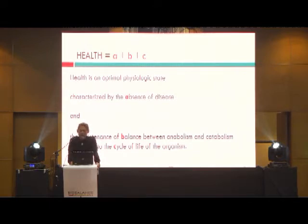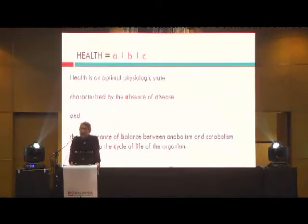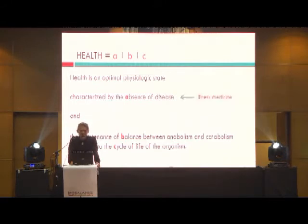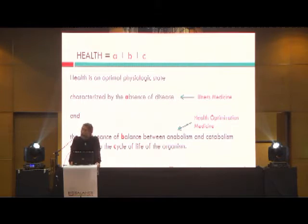Health equals A plus B plus C. Health is an optimal physiologic state characterized by: A, the absence of disease; and B, the maintenance of balance between anabolism — processes that make things grow, for example building muscles — and catabolism, processes that destroy stuff, for example food being destroyed to create energy, according to the cycle of life of an organism. Absence of disease is illness medicine. Maintenance of the balance between anabolism and catabolism, according to the cycle of life of the organism, is health optimization medicine.